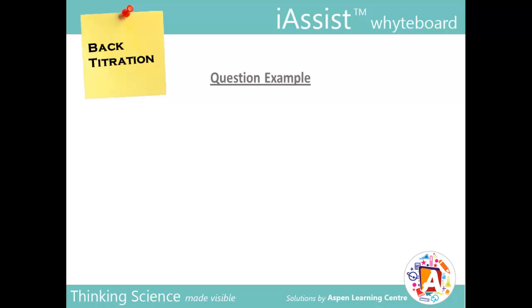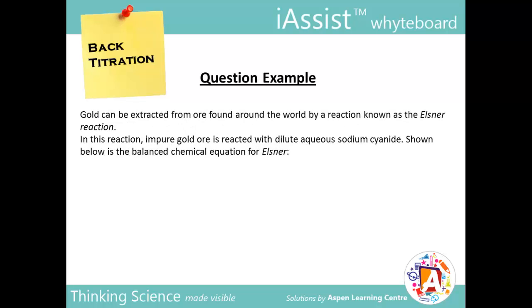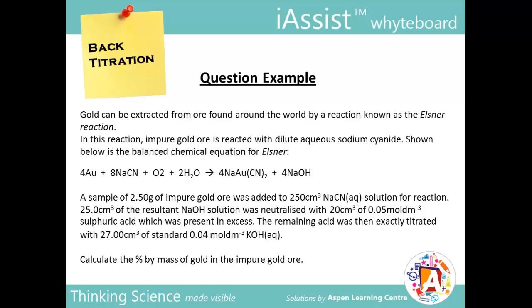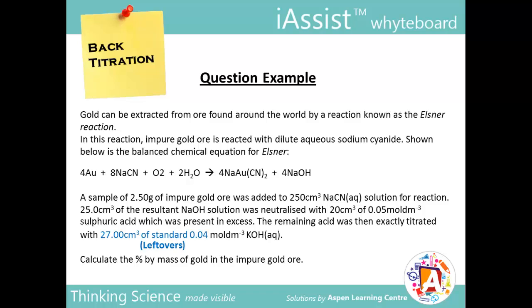Now let's look at a relevant question to apply this analogy. You may wish to pause this video to read the question. This is the unknown we want to solve for in the question. These are the keywords and phrases that suggest we are actually facing a back titration. So the large excess reagent we shall call the cake. The titration itself is therefore the leftovers, and this will be the eaten portion, which will lead us to solve the unknown.